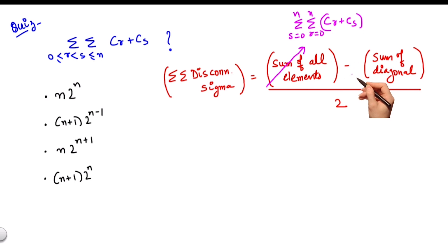And sum of the diagonal elements is nothing but summation cr plus cr, r from 0 to n. Summation cr plus cr because remember along the diagonal r and s are equal.